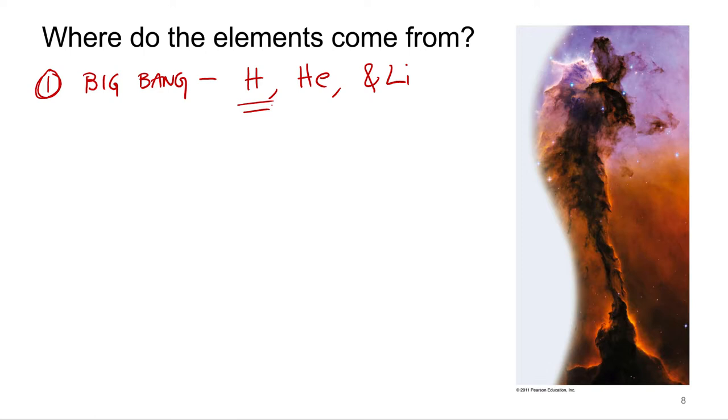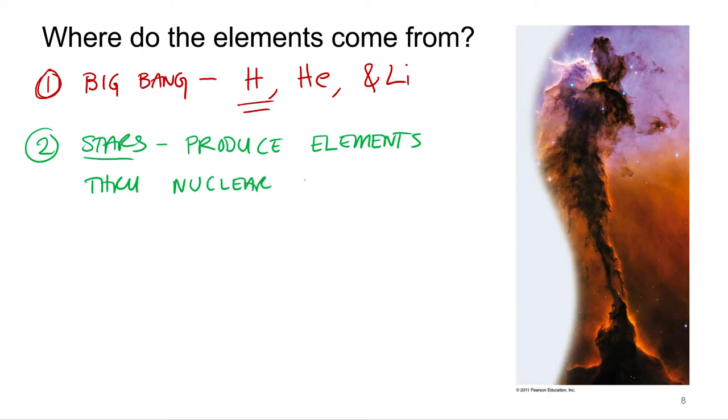So that is the second process that is creating elements: stars. Stars produce new elements through nuclear fusion. And they can make from helium all the way up to iron. That's what our star is doing. Our sun is making helium right now. And it turns out that's a pretty energetic process. We get a lot of energy from our sun. Lots of gravity pushing hydrogen atoms together at the core of the star making helium and other isotopes.